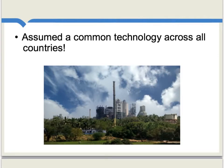Going back to the theory of Heckscher and Ohlin, recall that we assumed a common technology across all countries. When you have a common technology, it's relatively easy to classify which countries are labor-intensive or capital-intensive. But when technology varies across countries, we have to worry not just about the quantity of labor but how effective that labor is.